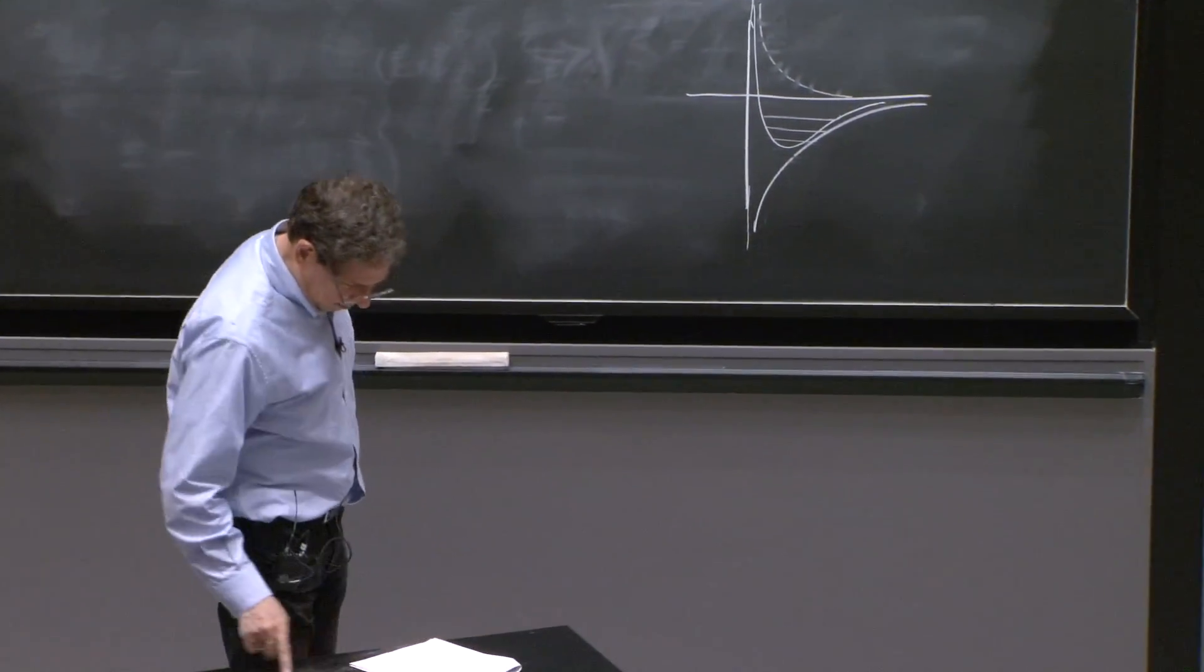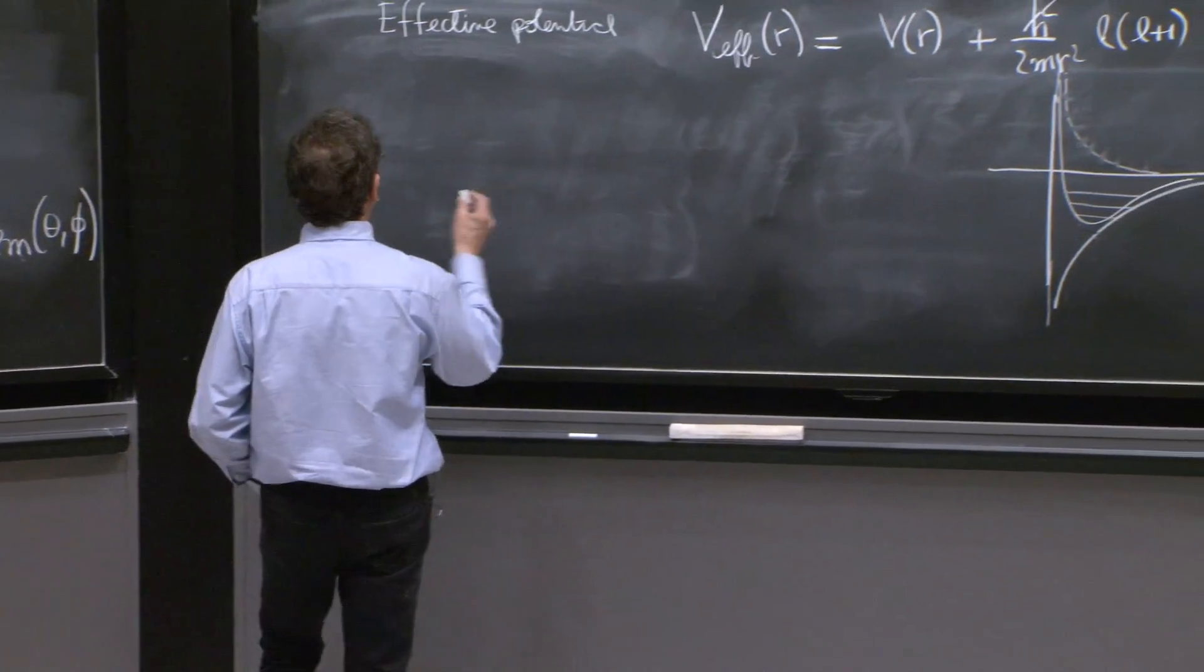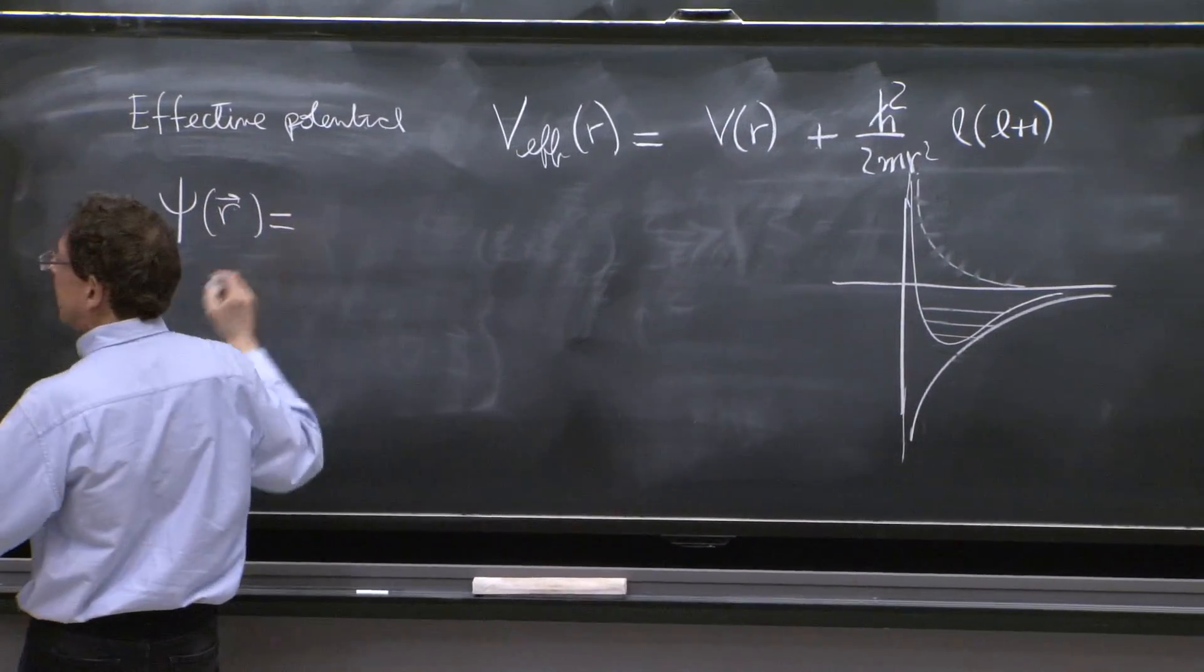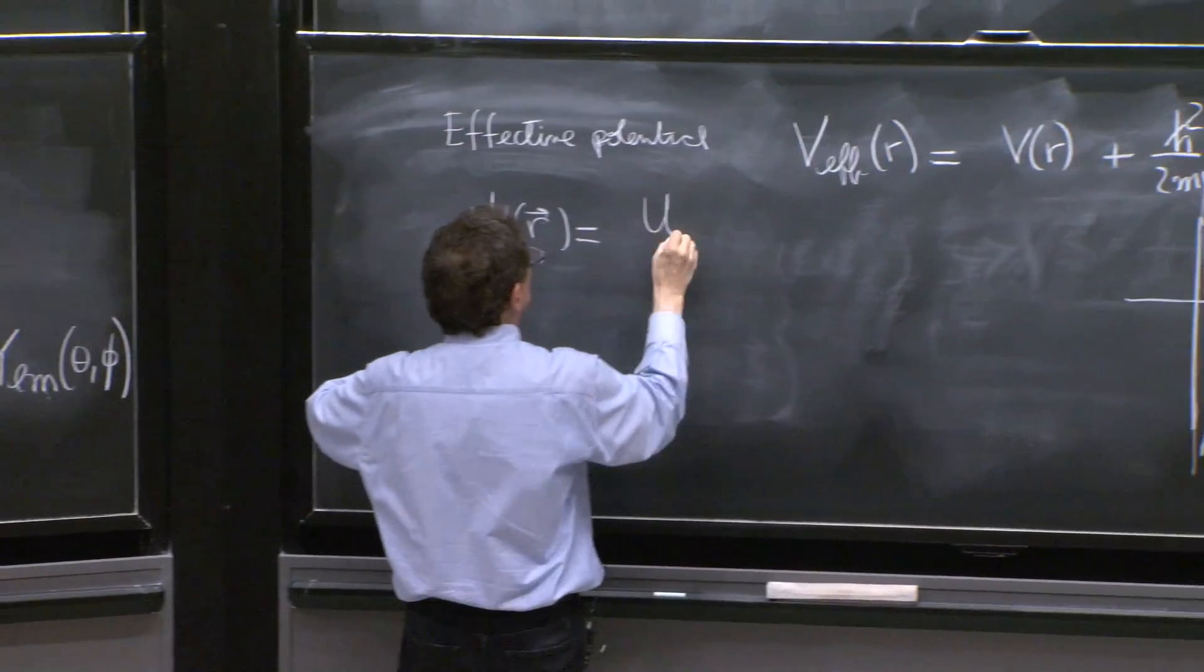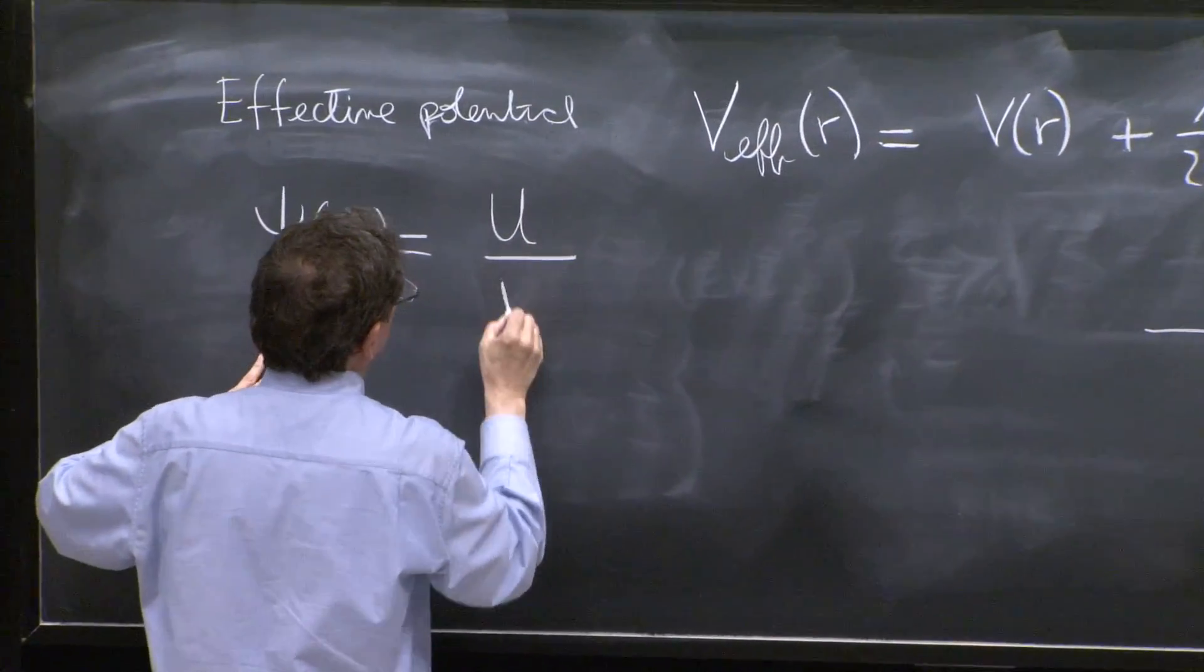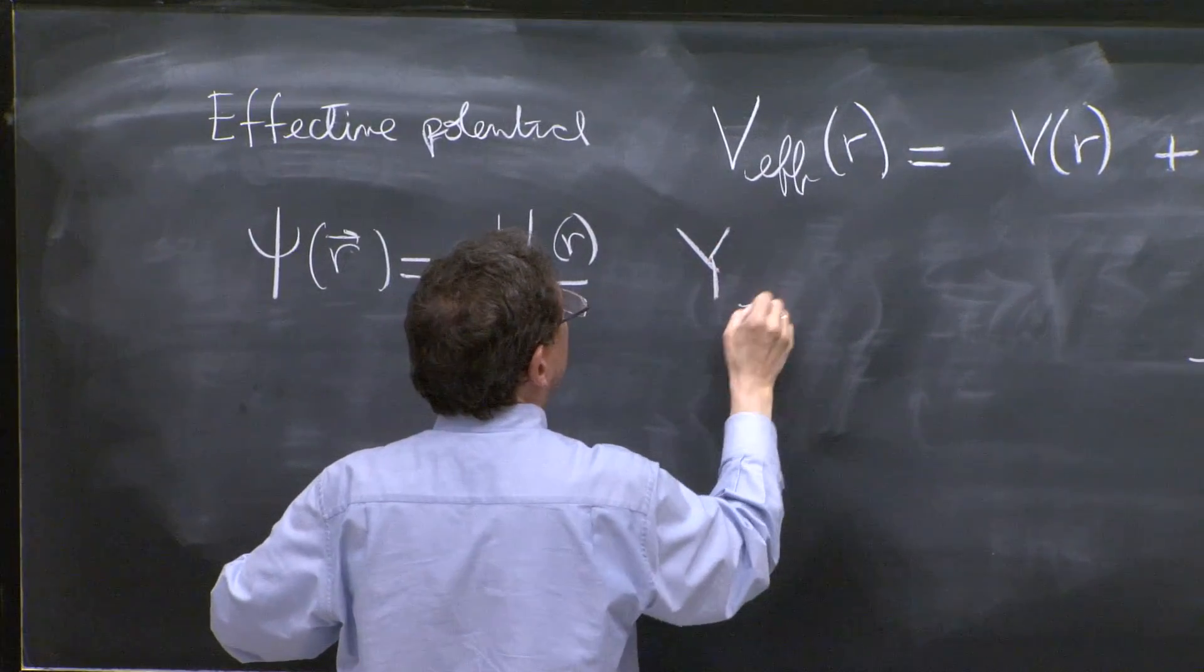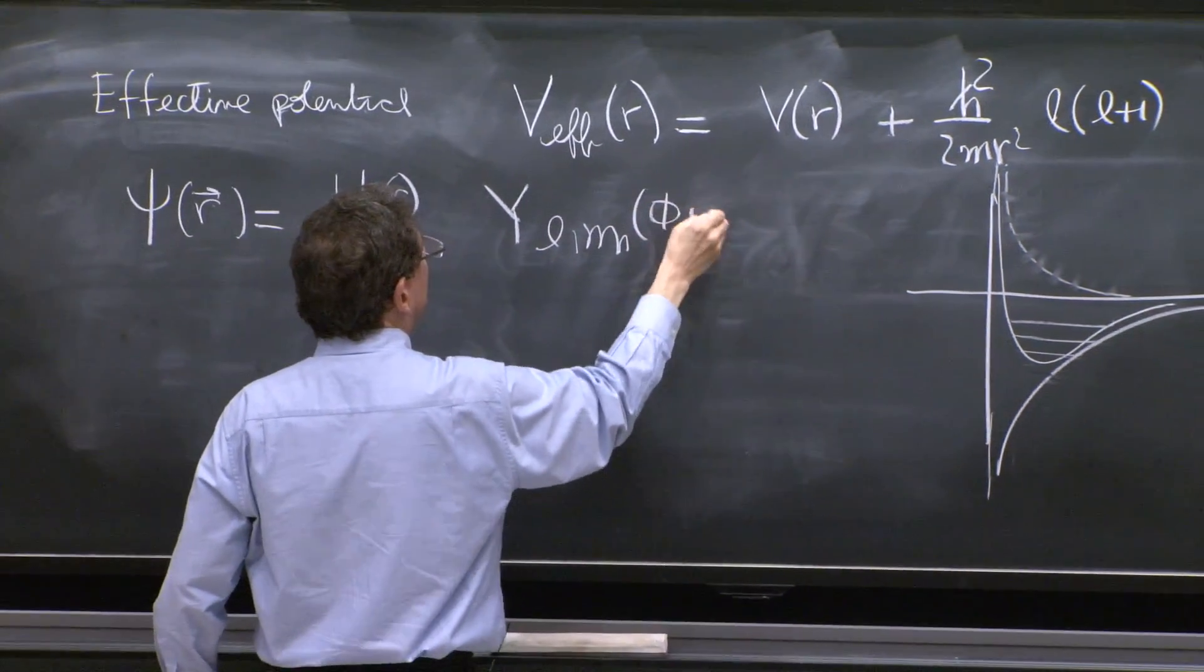So this is the effective potential. And it's good to recap and remember that the solution that you've written is r_E, but r_E is u over r, u(r) over r, Y_lm of theta and φ.